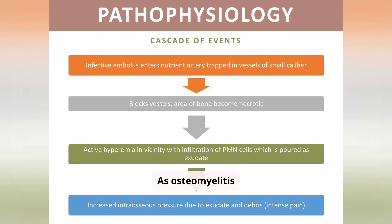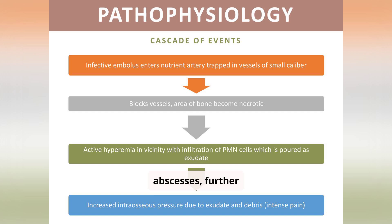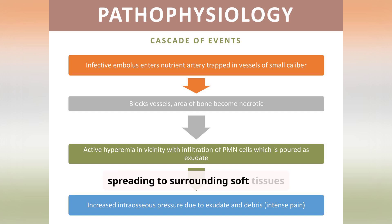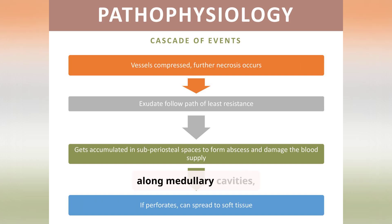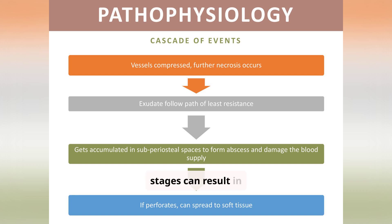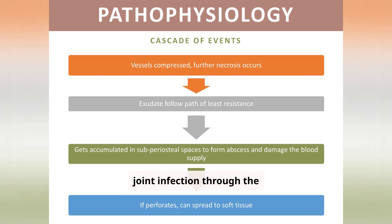As osteomyelitis progresses, exudate creates subperiosteal abscesses, further necrotizing bone and potentially spreading to surrounding soft tissues if unchecked. The infection spreads along medullary cavities, destroying marrow and blood supply, with advanced stages resulting in diaphysial sequestration and joint infection through the physis.